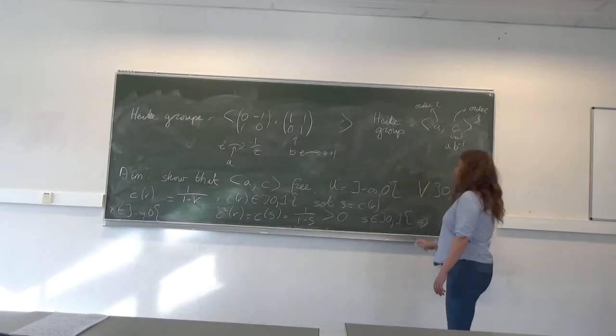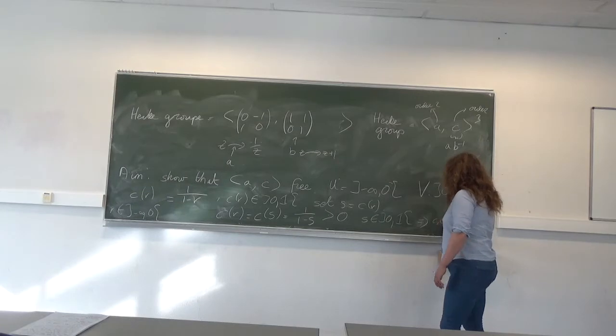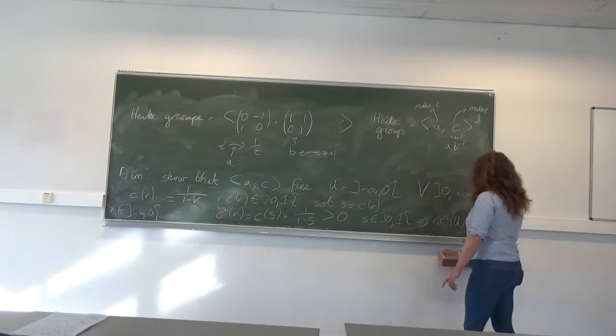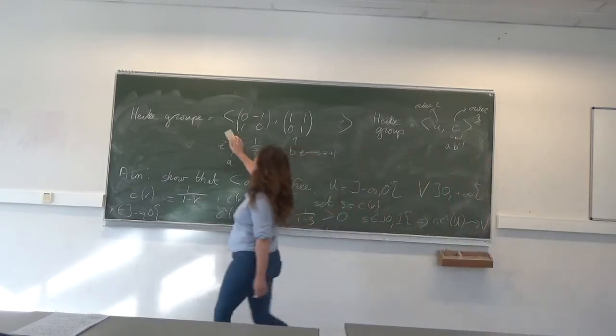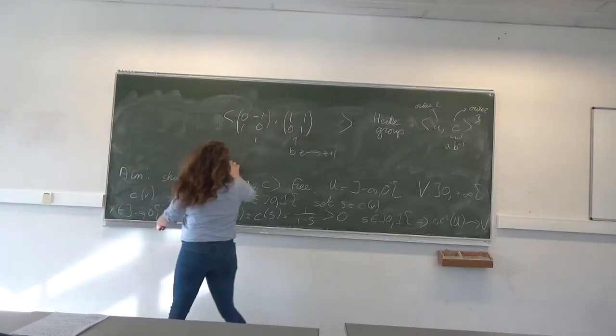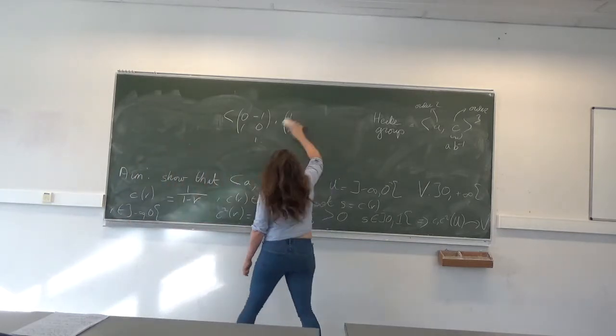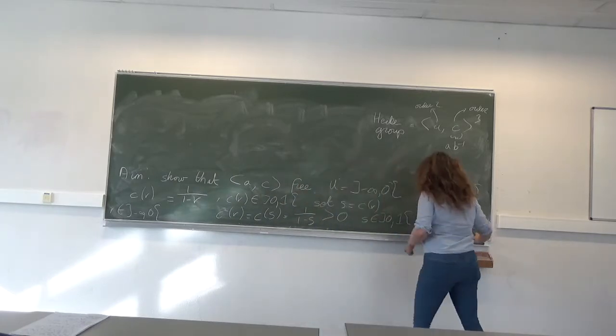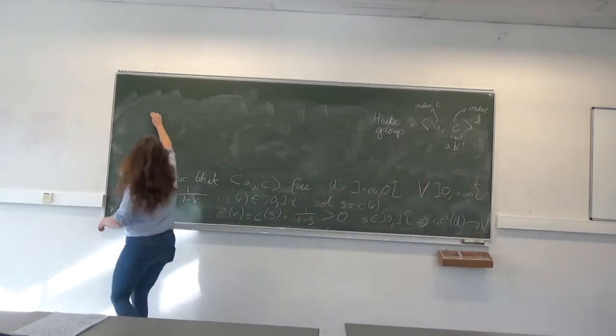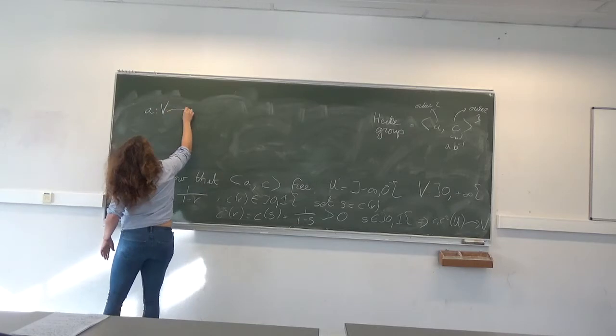And so what I get at the end is that c and c² send u to v. But similarly, I have that a sends v to u.